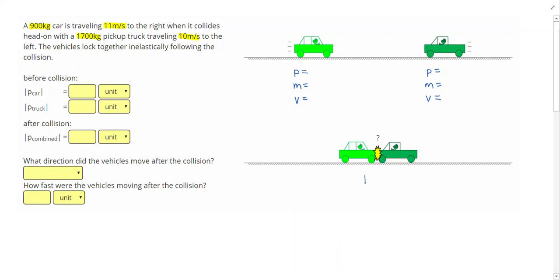The vehicles lock together inelastically following the collision. So let's set this momentum problem up by writing momentum under each vehicle, which is P, M for mass and V for velocity, under the car, underneath the truck. Since the vehicles stick together, we're going to think of this as one object.